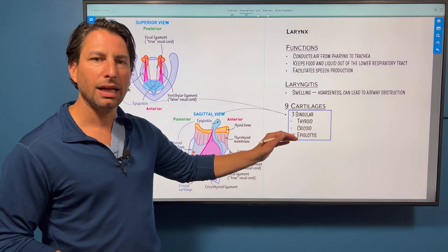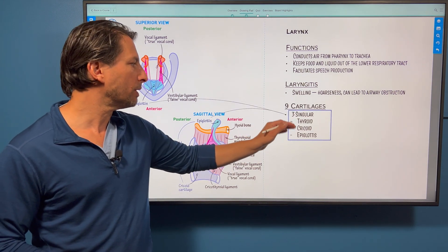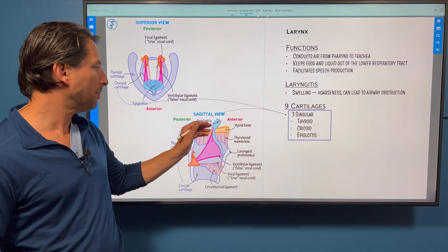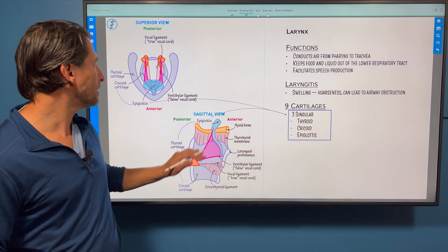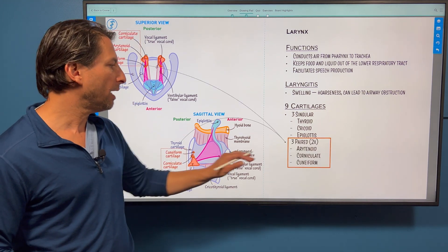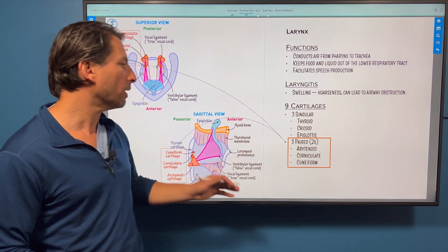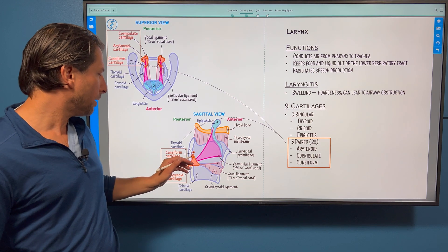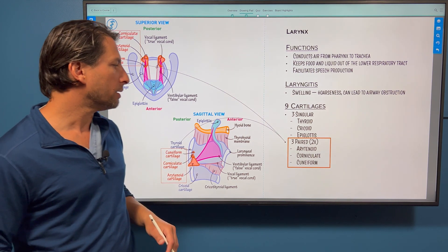The cartilages, there's nine total. Start with the ones that are just singular. Here's the thyroid cartilage, the epiglottis, and then the cricoid cartilage. That's in sagittal, and then we also have it here in axial view. And then we have our paired ones, meaning there's one on each side. So here's the cuneiform, corniculate, and the arytenoid cartilages.